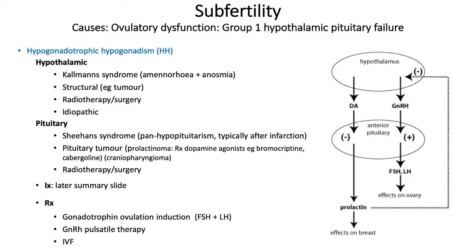Kallmann syndrome is a genetic disorder that prevents initiation or completion of puberty due to lack of GnRH released by the hypothalamus. Sheehan syndrome, under the pituitary section, is panhypopituitarism typically occurring after infarction such as postpartum haemorrhage. Pituitary tumours include prolactinomas and craniopharyngiomas. Craniopharyngioma grows in the pituitary stalk; prolactinoma produces too much prolactin, resulting in headaches, visual field defects, and menstrual disturbance, measurable by serum prolactin levels. Treatment depends on cause — surgery, or dopamine agonists like bromocriptine or cabergoline for prolactinoma.